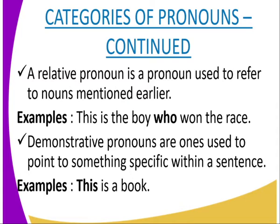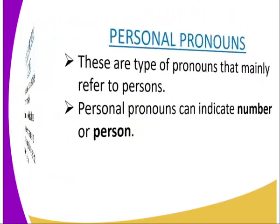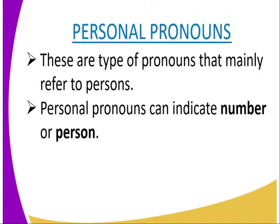The next category is the demonstrative pronoun. Demonstrative pronouns are the ones used to point out something specific within a sentence. Examples include: 'This is a book,' 'That is a boy,' 'That is a chair.' The words this, that, those — they point things out — are the demonstrative pronouns.